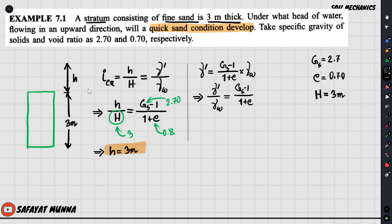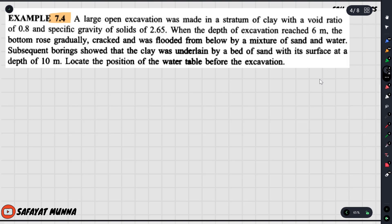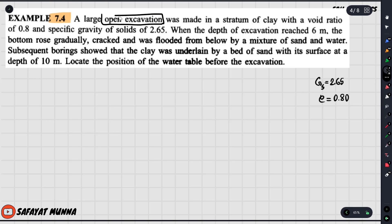This is the second example — Example 7.4. A large open excavation was made in a stratum of clay with a void ratio of 0.80 and specific gravity of solids 2.65. So Gs = 2.65 and void ratio e = 0.80. This is a large open excavation in a stratum of clay.